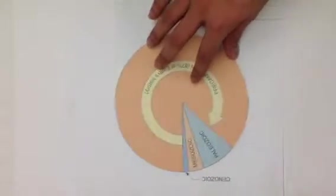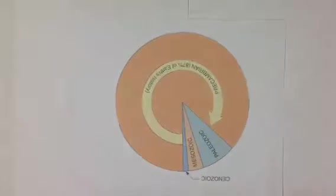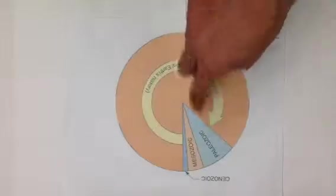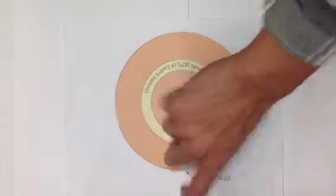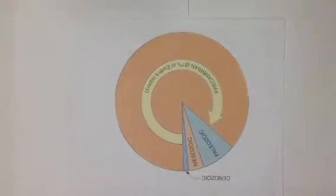The 4.6 billion years were divided into four eras: the Precambrian, Paleozoic, Mesozoic, and Cenozoic. Let's begin with the Precambrian Era.